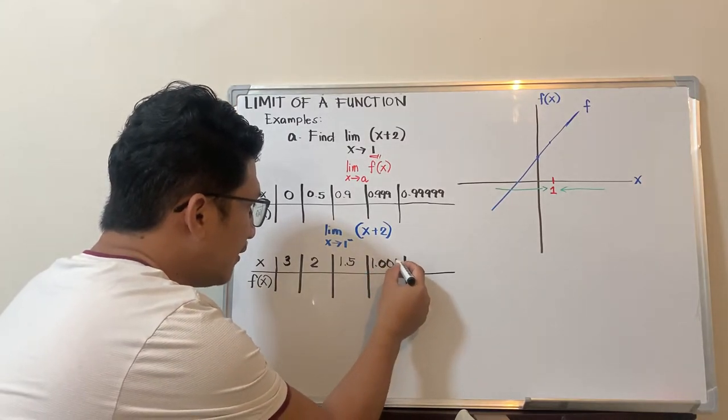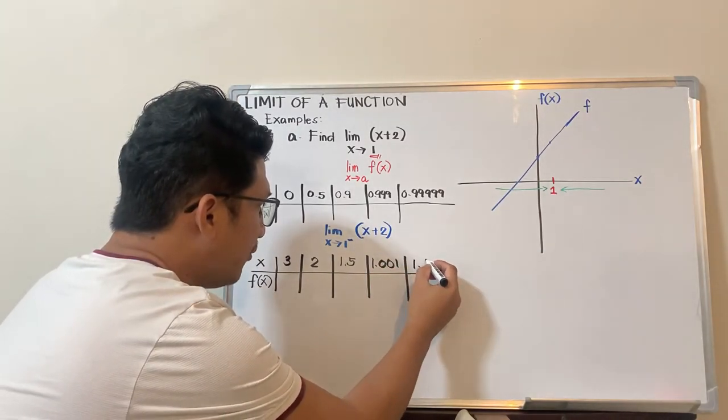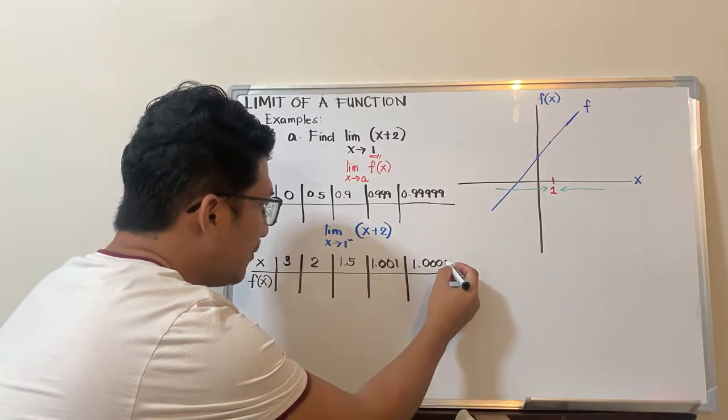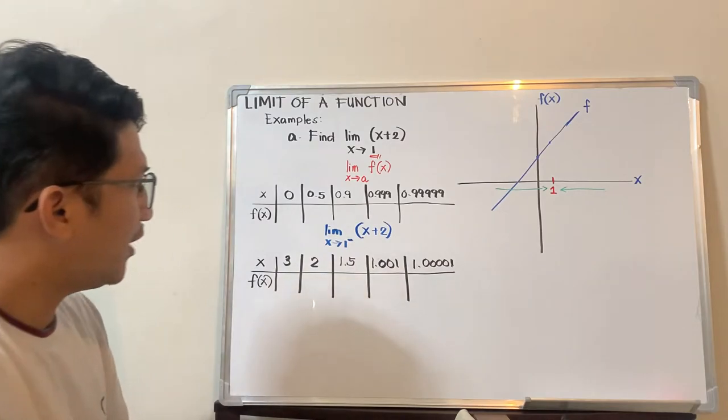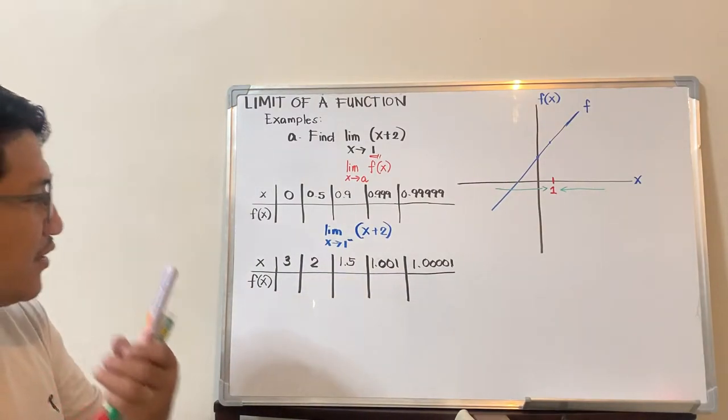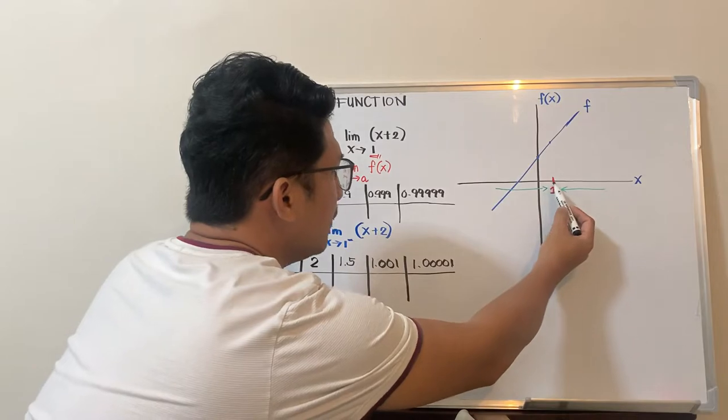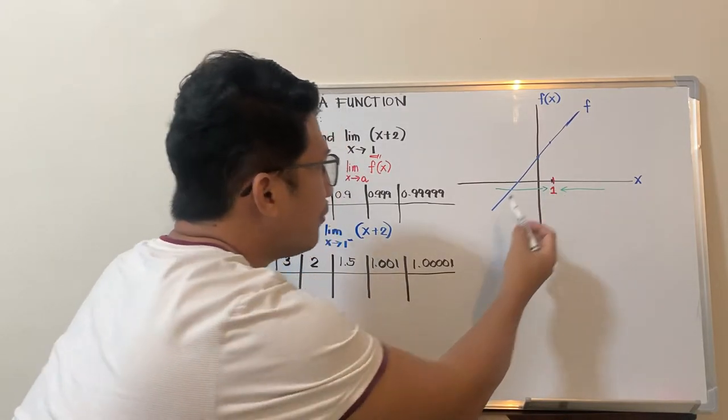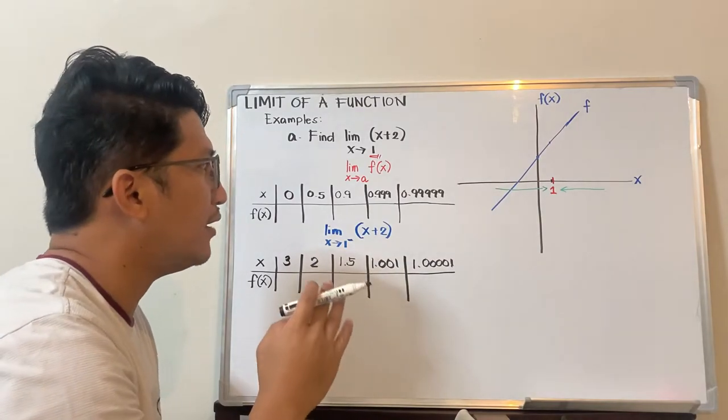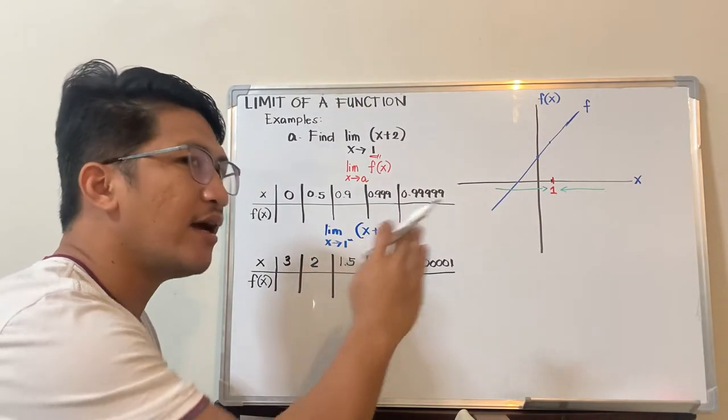Then 1.0001. If you're confused about the values, just imagine a number line. A number from the right that's close to 1—maybe 1.0001, or 1.00001. The closer to 1, the better.